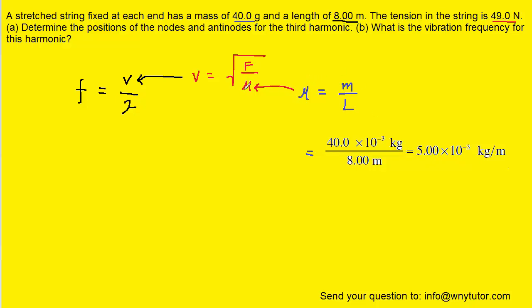Now we can plug that in to the speed equation and calculate the speed. So we've come down here to show that calculation. We've plugged the tension in as well as the linear density and we get approximately 99 meters per second for the speed of the wave on the string.